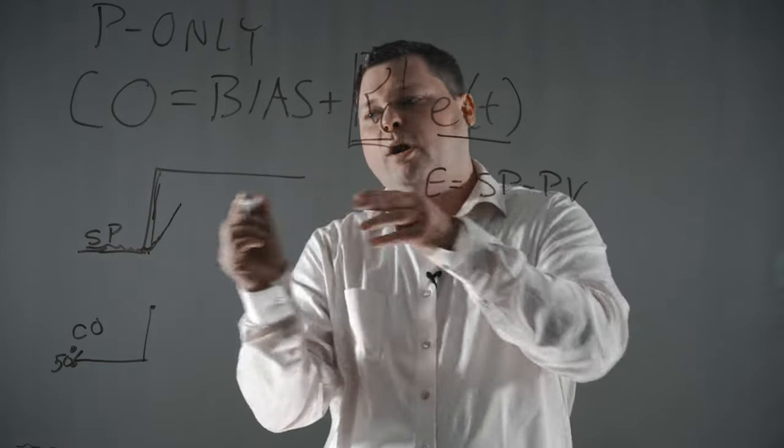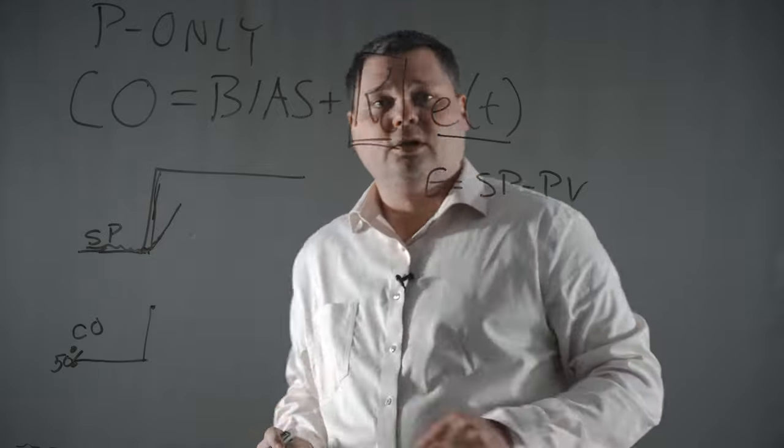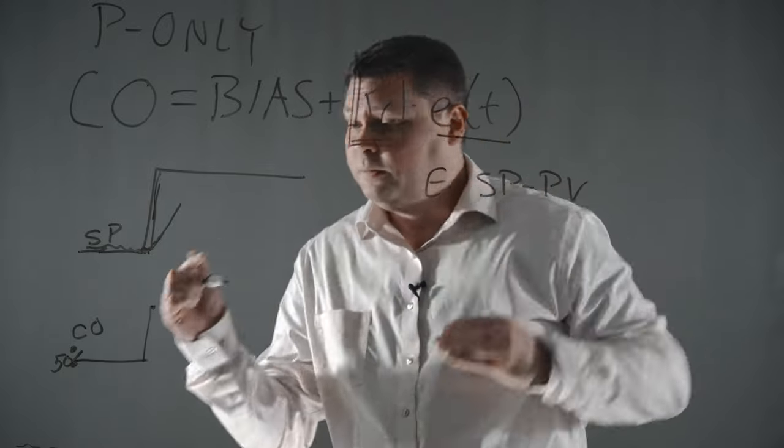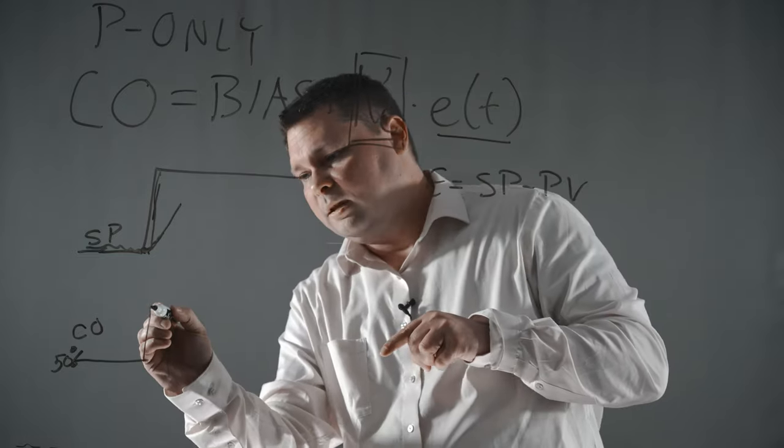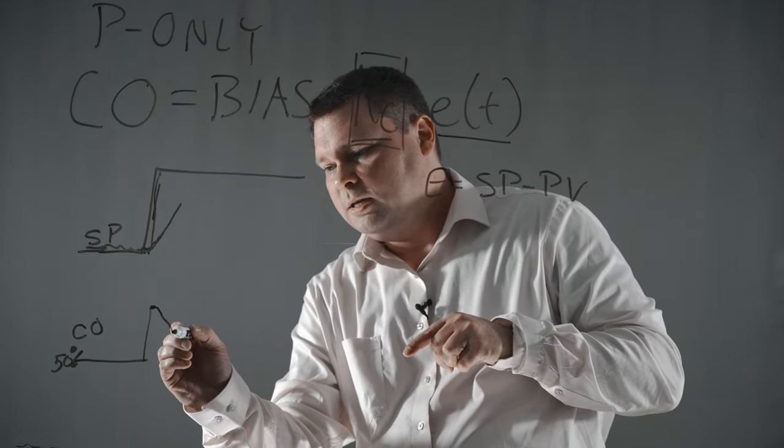Well, what happens to our error as our process variable gets closer to our setpoint? The error starts to drop. So when the error starts to drop, whatever the error is times the gain, it starts to drop. So you start to see your controller output backing down.